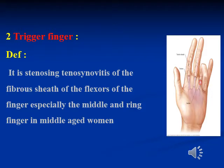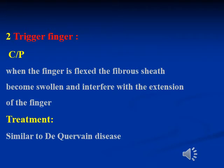The second type of tenosynovitis is trigger finger. It is a stenosing tenosynovitis affecting the fibrous sheaths of the flexors of the finger, especially the middle and ring fingers, particularly in middle-aged women. When the finger is flexed, the fibrous sheaths become swollen and interfere with extension, so the finger is stuck in a flexed position, looking like you are triggering a gun or pistol.